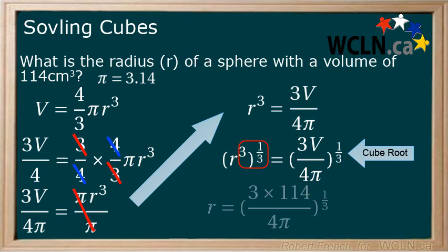This leaves us with r equals 114 multiplied by 3 divided by 4 pi all raised to the power of 1 over 3. We can leave our answer in exponent form or evaluate to get 3.01 centimeters.